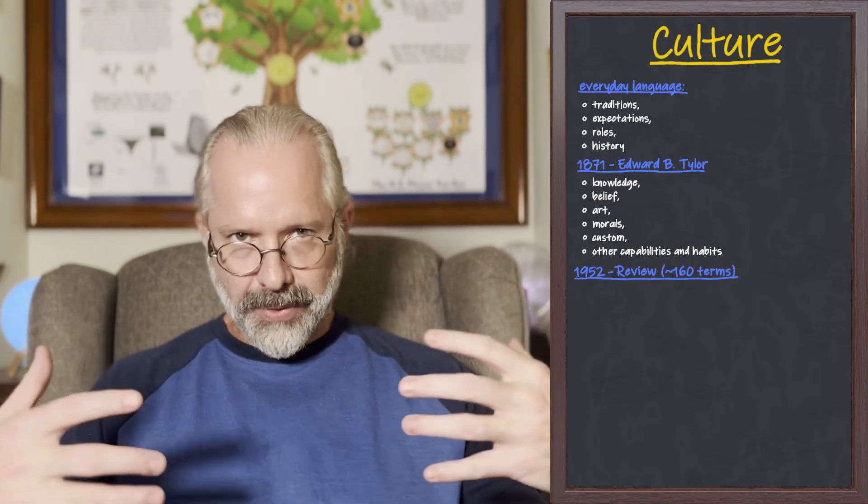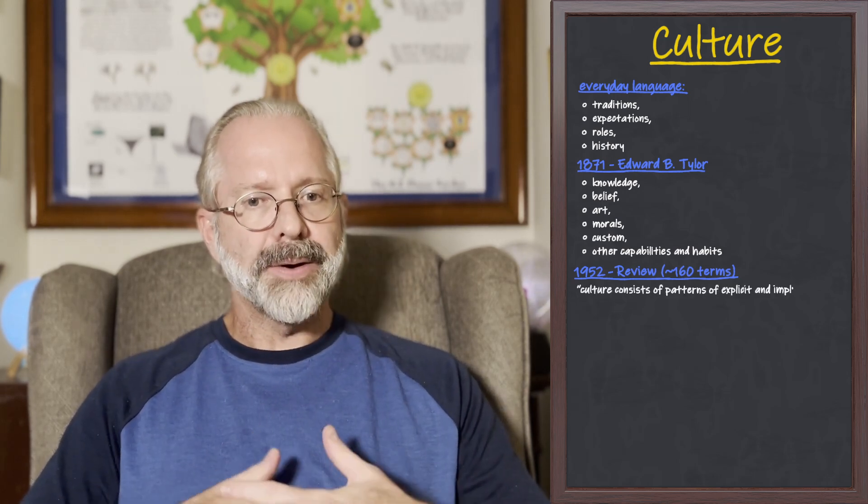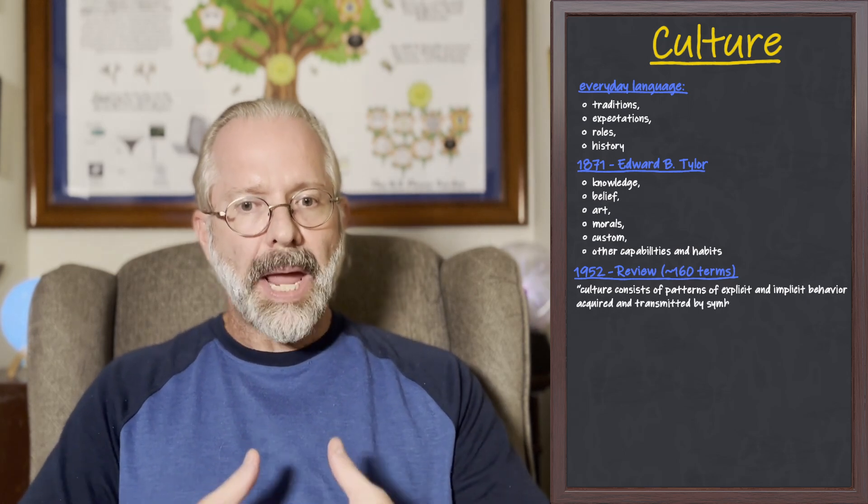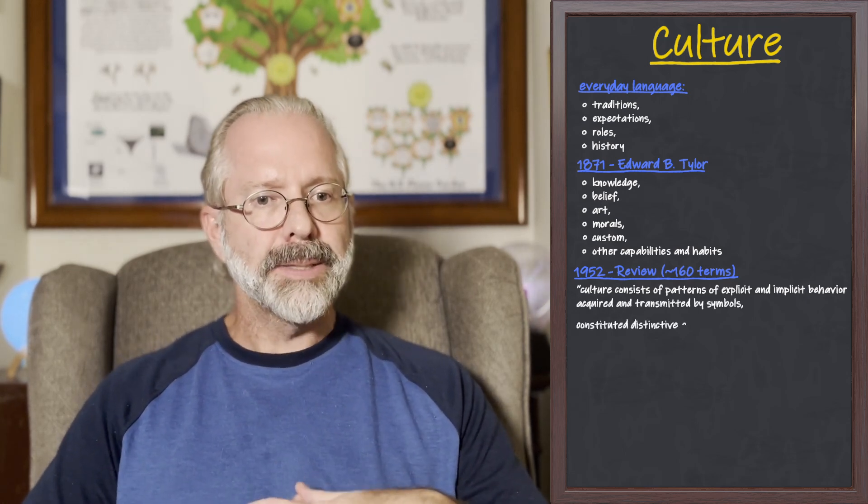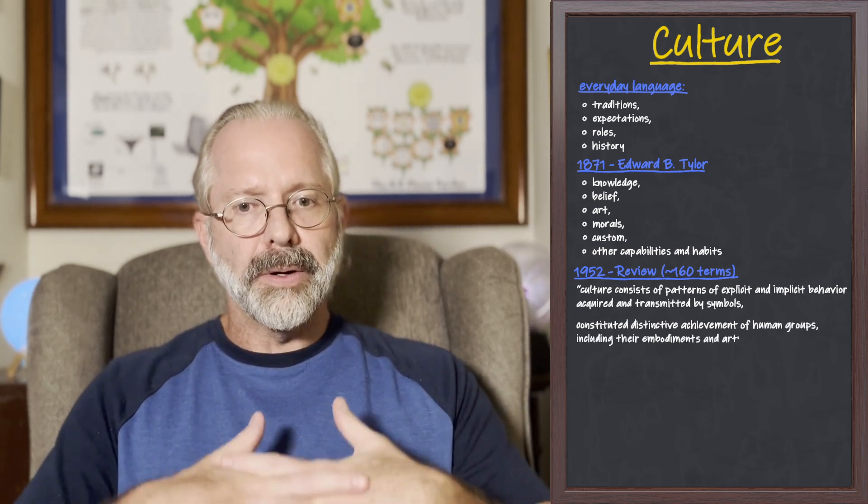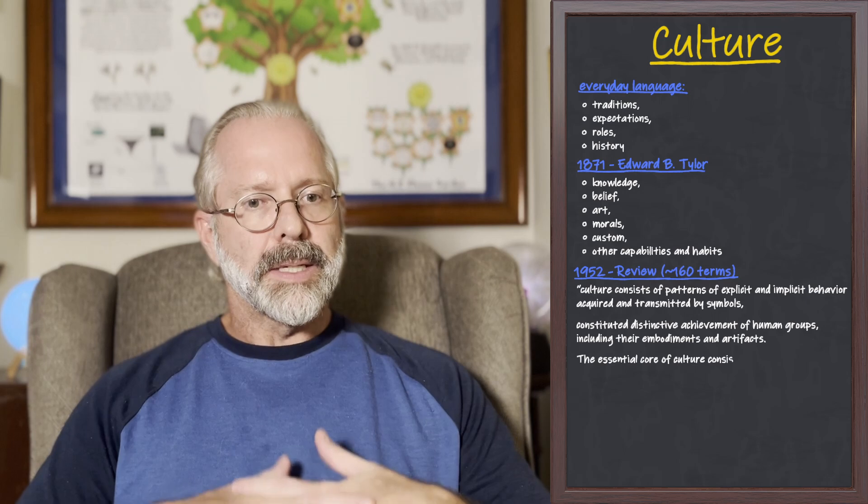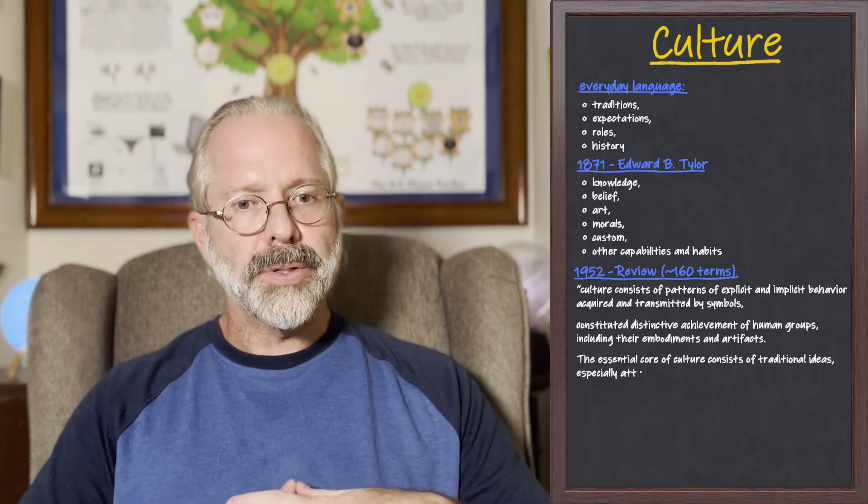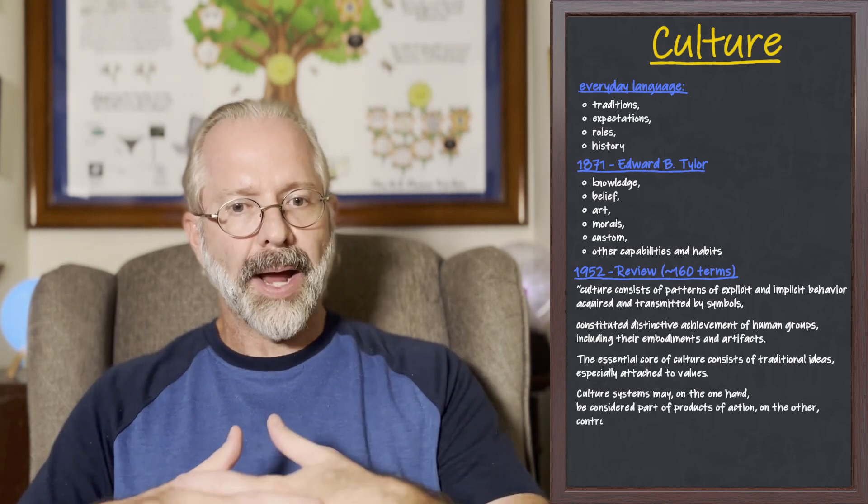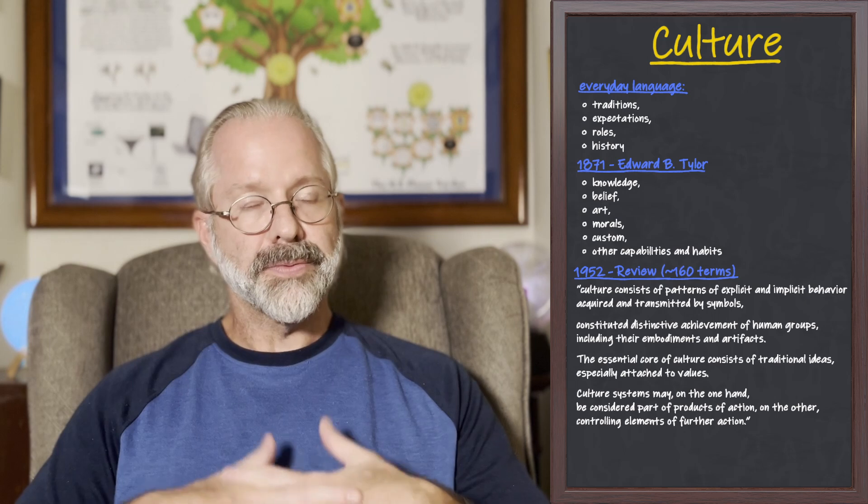Almost 100 years later, some scholars did a review in 1952 and identified almost 160 terms. They said culture consists of patterns of explicit, implicit behavior acquired and transmitted by symbols, constituted distinctive achievement of human groups, including their embodiments and artifacts. The essential core of culture consists of traditional ideas, especially attached to values. Culture systems may, on the one hand, be considered part of products of action, on the other, controlling elements of further action.